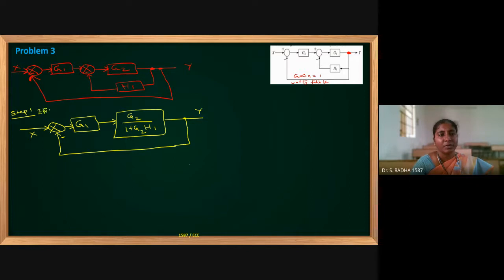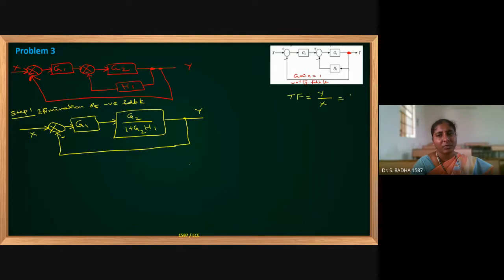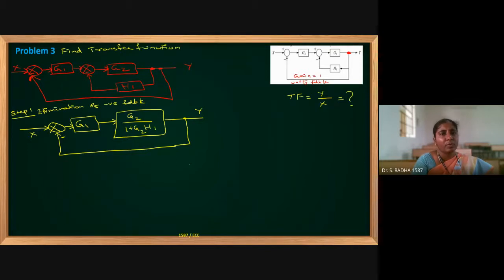The rule name is elimination of negative feedback. In the online exam, nobody will ask for all the steps — we want only the final transfer function. Transfer function is nothing but output divided by input in the Laplace transform. Transfer function, system function, and frequency response are all the same: output by input in Laplace transform. Step 1 is completed.